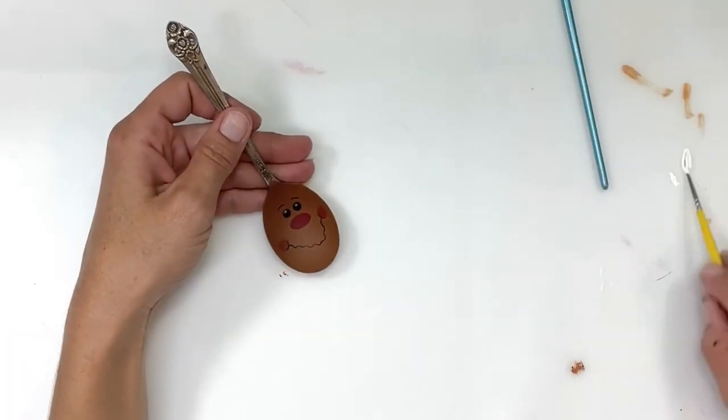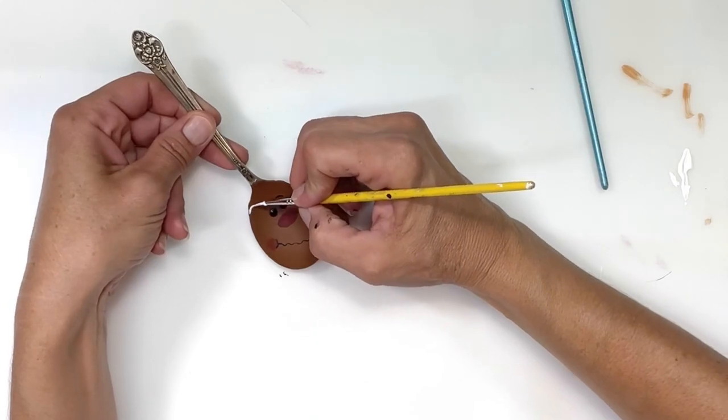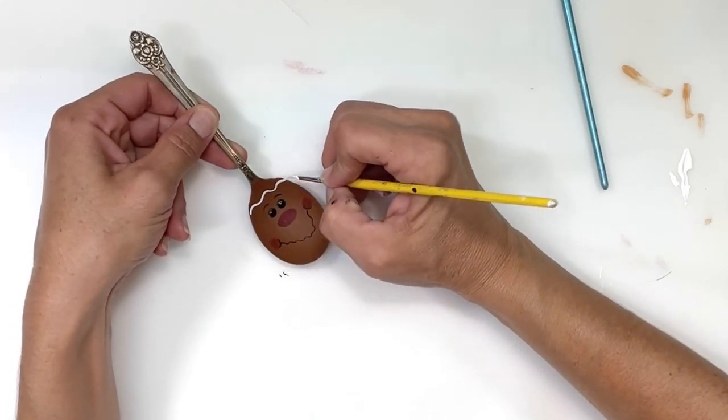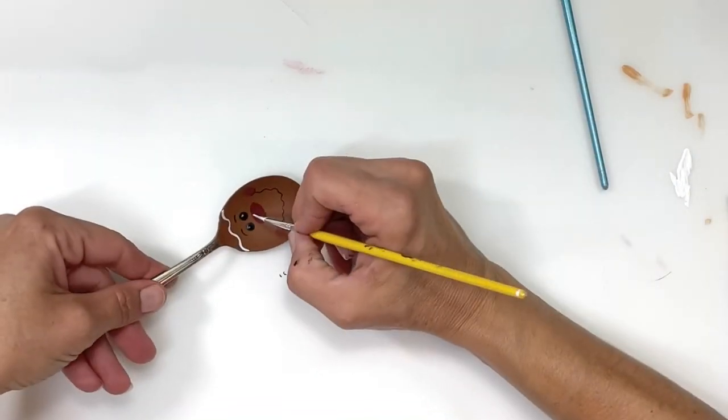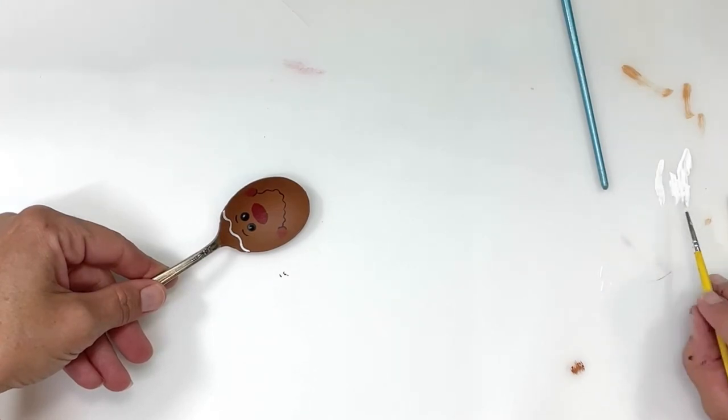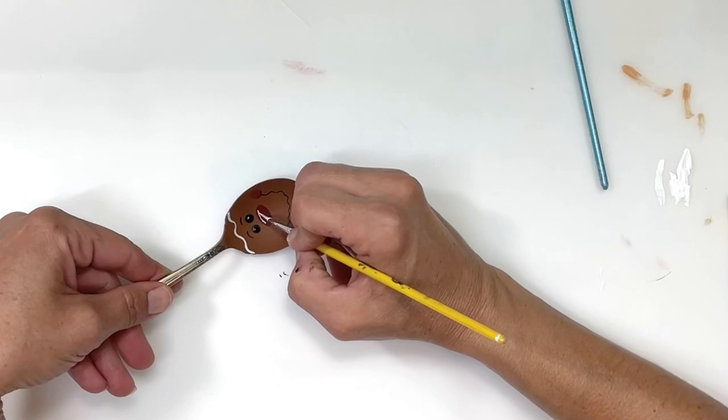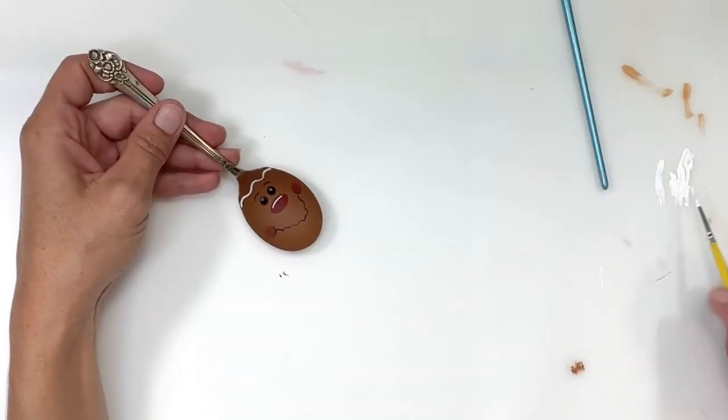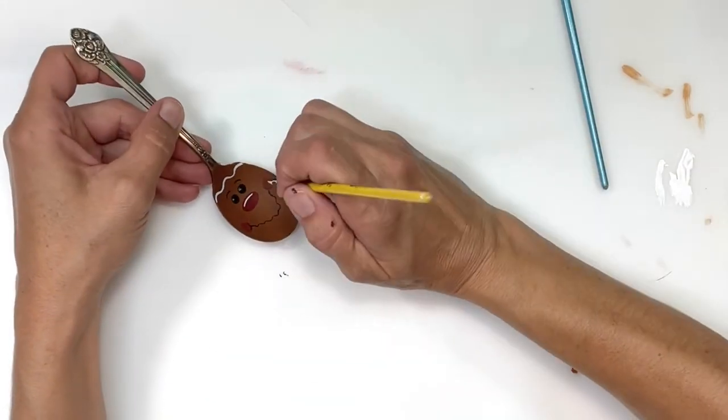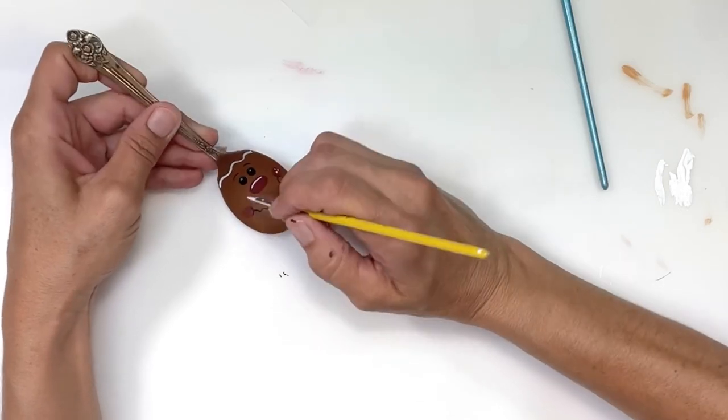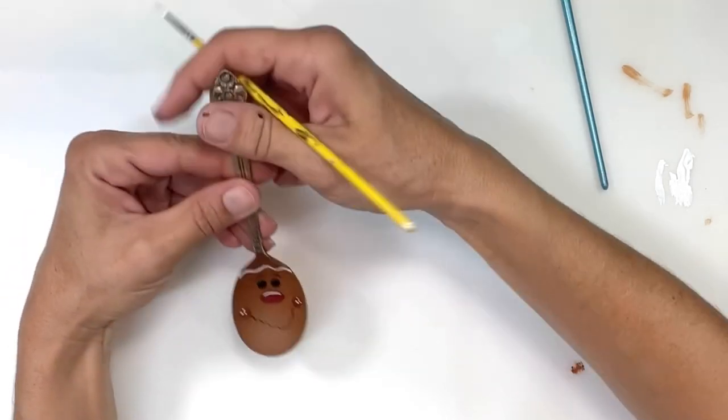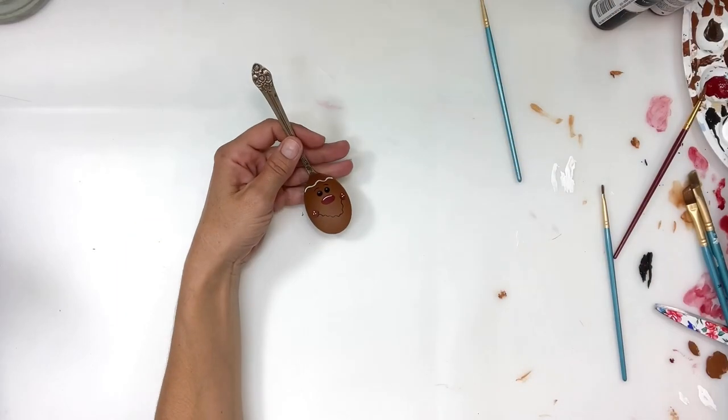Once I have that all done, I'm going to take some white and do a squiggly line at the very top for his frosting. Then I'm going to do another small line right on the top of the nose, and then three little dots on either side of his mouth where the red is on his cheeks.